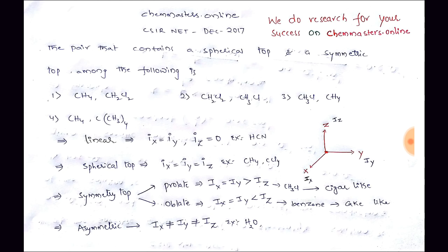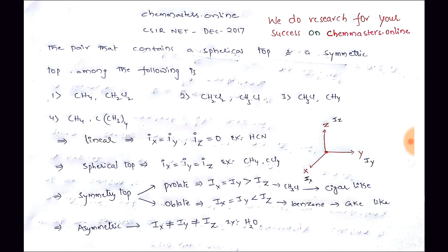There are two kinds of symmetric top molecules: prolate and oblate. For prolate symmetric top molecules, Ix equals Iy and is greater than Iz — the example is chloromethane (CH₃Cl), shaped like a cigar. For oblate symmetric top molecules, Ix equals Iy and is less than Iz — the example is benzene, shaped like a cake. For asymmetric top molecules, Ix does not equal Iy and does not equal Iz — example is water.